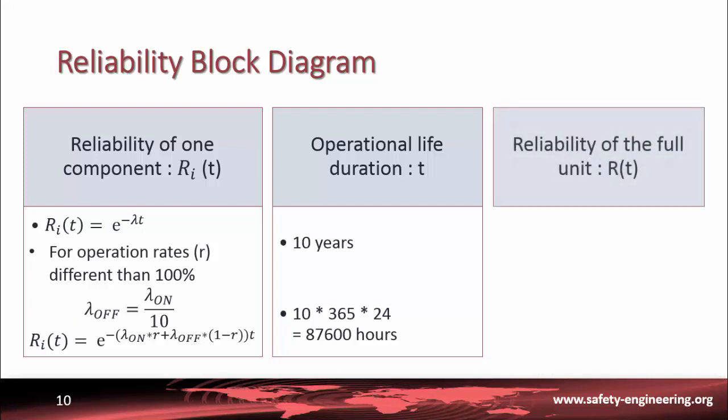Finally, to calculate the reliability of the full unit, we have to consider the type of configuration. For active redundancy 1 among n, we have the following equation, where r_i is the reliability of each component and n is the number of units in parallel.